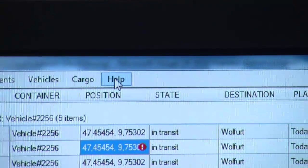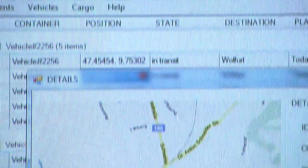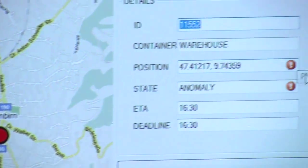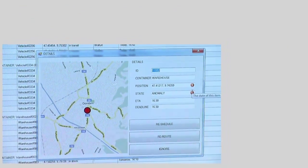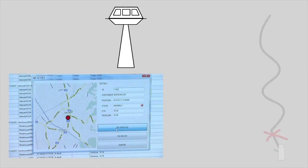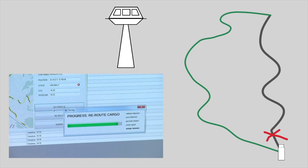The cargo reports the detour to the back-end and consults with it for actions to be taken. The transport management system is able to deduce the alternative route the truck is going to take. The cargo agent is informed about the new route and updates its mission accordingly.